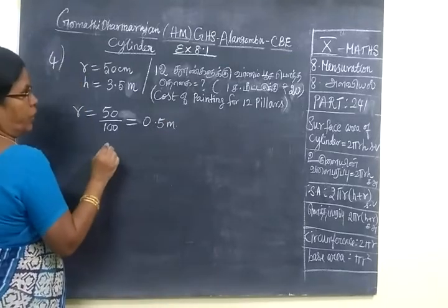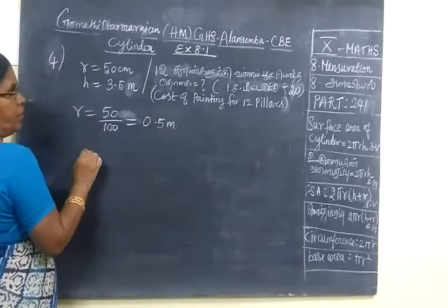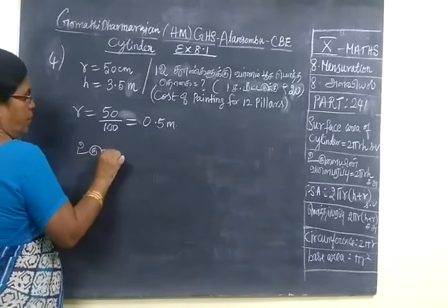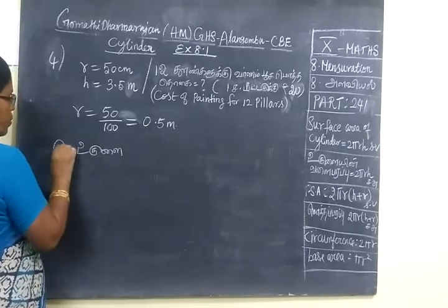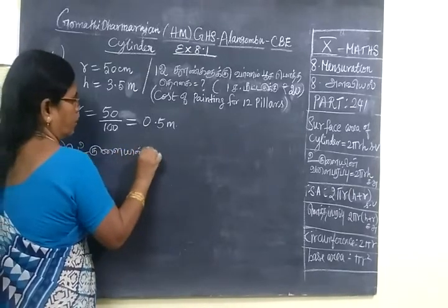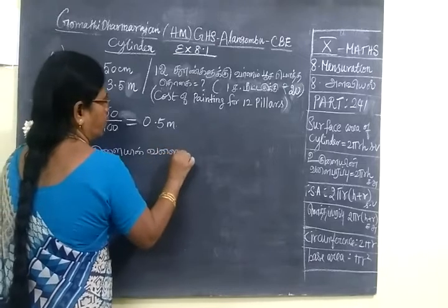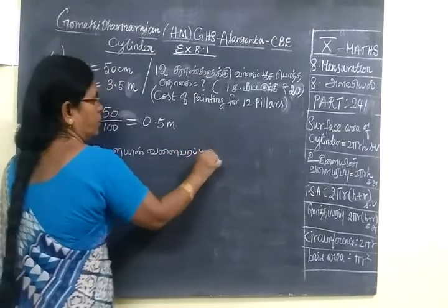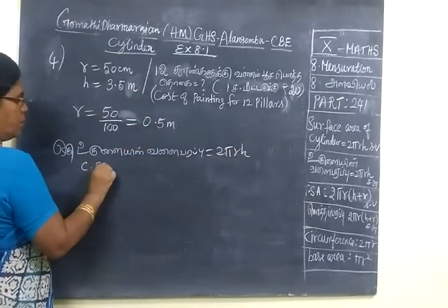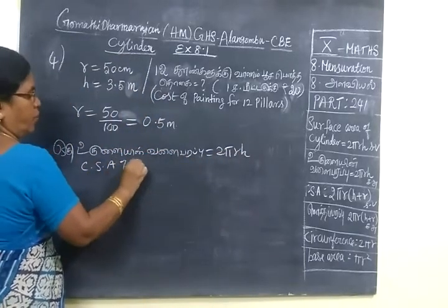Now we have to find the curved surface area of 1 pillar. So 1 pillar, then we'll do 12. Equal to 2πrh. That is CSA of 1 pillar.